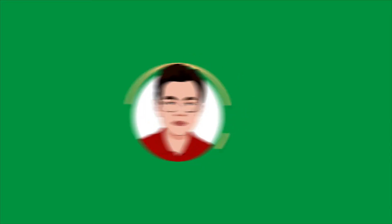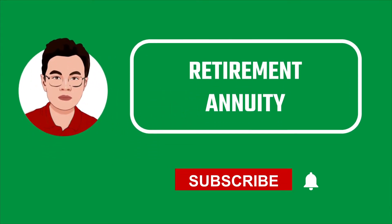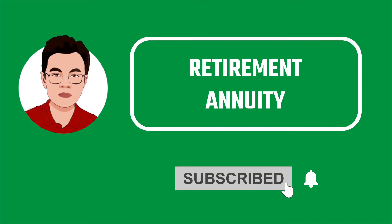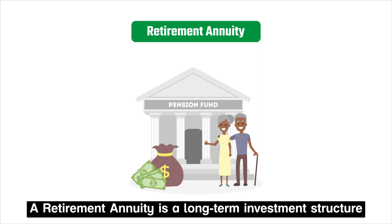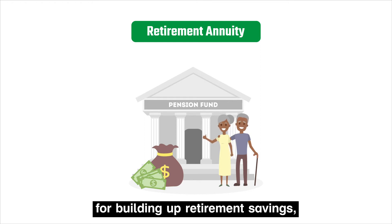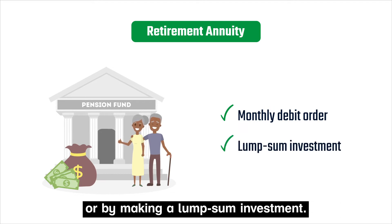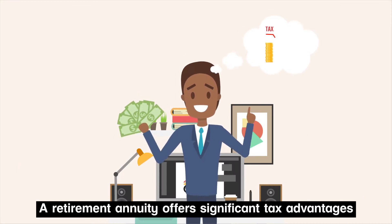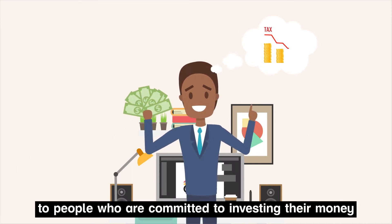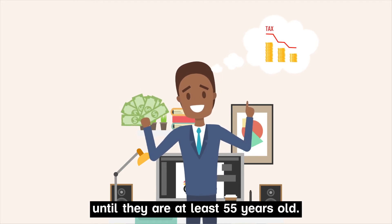Hi, Uncle Kevin here. Let's talk about retirement annuity. A retirement annuity is a long-term investment structure for building up retirement savings, either on a recurring monthly debit order basis or by making a lump sum investment. The retirement annuity offers significant tax advantages to people who are committed to investing their money until they are at least 55 years old.